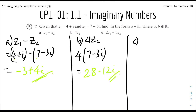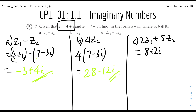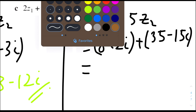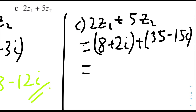For part 3, 2z1 plus 5z2: 2z1 equals 2 times (4 plus i), which is 8 plus 2i. And 5z2 equals 5 times (7 minus 3i), which gives 35 minus 15i. Adding these together: the real part is 8 plus 35 equals 43, and the imaginary part is 2i minus 15i equals minus 13i. So the answer is 43 minus 13i.